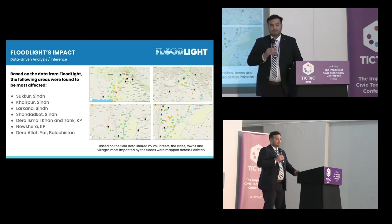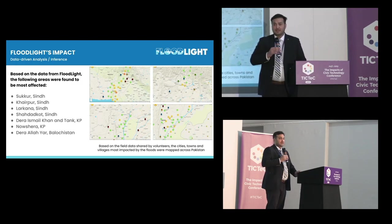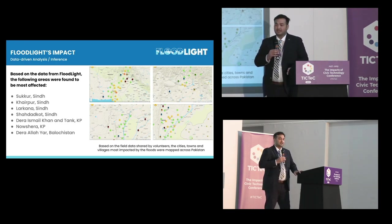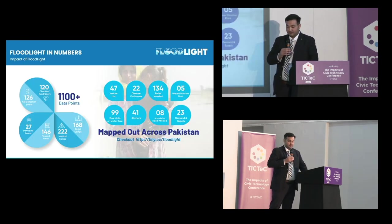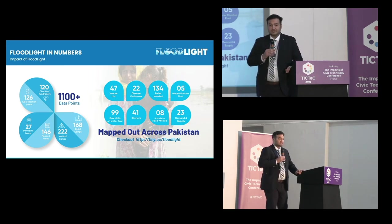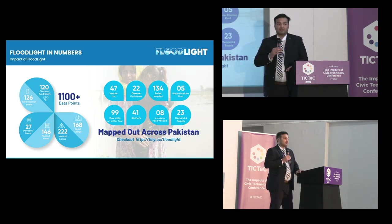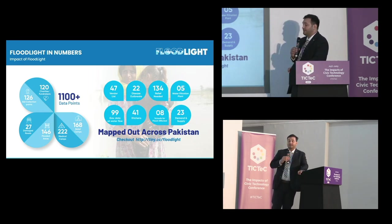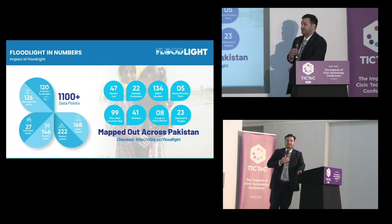Floodlight also provided actionable data for rehabilitation activities. Model villages were created, providing opportunities and education to flood-affected communities — activity focused on long-term recovery and rehabilitation. Close to 1,100 data points were mapped across Floodlight, providing detailed insights into where relief was most needed. A team of over 2,700 volunteers helped map more than 300 relief collection points, 200-plus medical pharmacies, and 50 mass kitchens — enabling coordination of relief efforts on the ground.